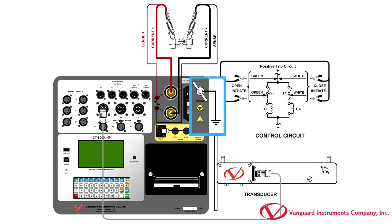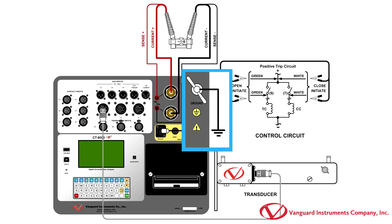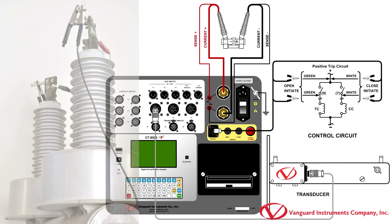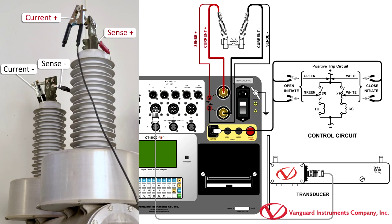First, start by connecting the CT-8000-S3's ground terminal to the substation ground. Now, connect the current and sense cables as shown here.